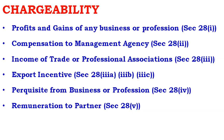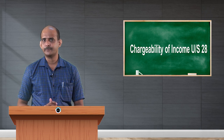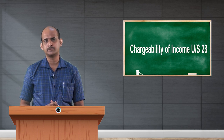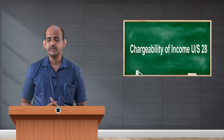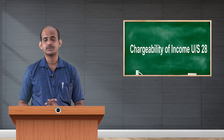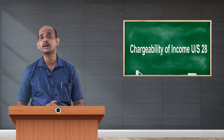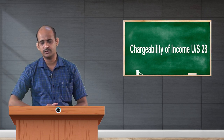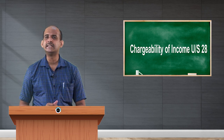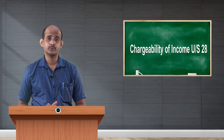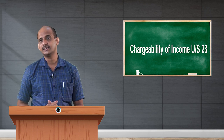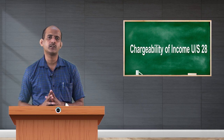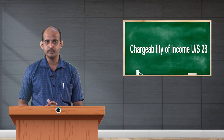Similarly, remuneration to partners. A partnership firm is assessed as a separate person, but partners being in a partnership firm — whatever remuneration they receive cannot be shown as income of the partnership firm. The profits of the partnership firm are different from the income of the partners. For being a partner in a partnership firm, the partner will receive remuneration in the form of wages or salary, interest, commission, bonus, etc. Such remuneration, whatever the partner receives, will not be shown as income of the partnership firm, but will be shown as his individual income, and it is apt to record such incomes under section 28 as income from business and professions.